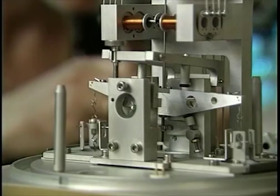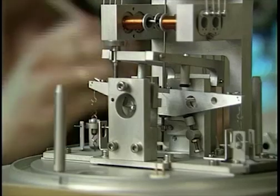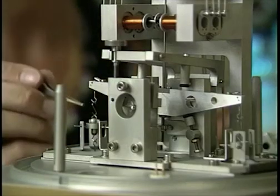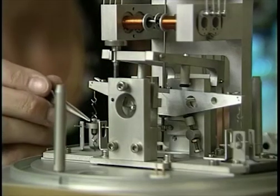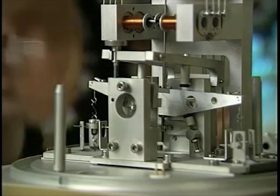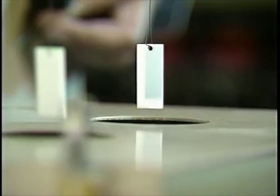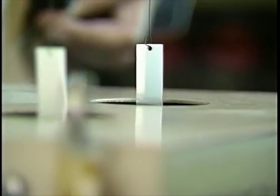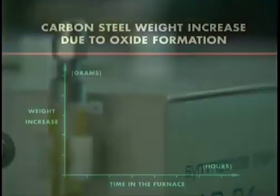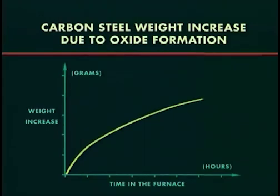Because oxygen is being added during oxidation, the weight increases. So this equipment monitors the oxidation by weighing the piece of steel in the furnace. As you can see, the oxide starts to form quickly on the carbon steel.